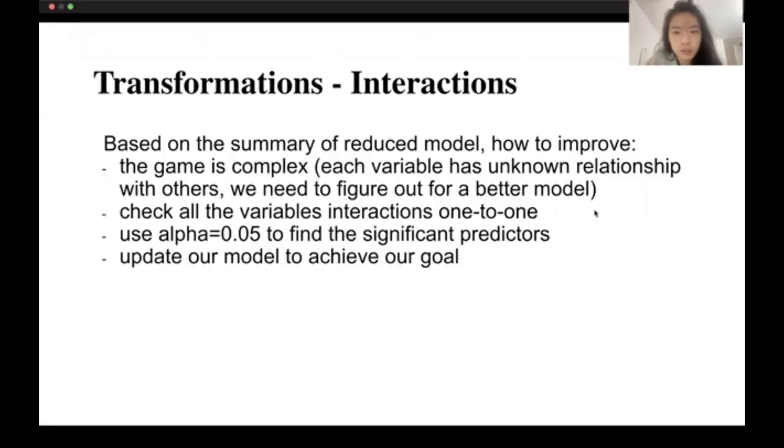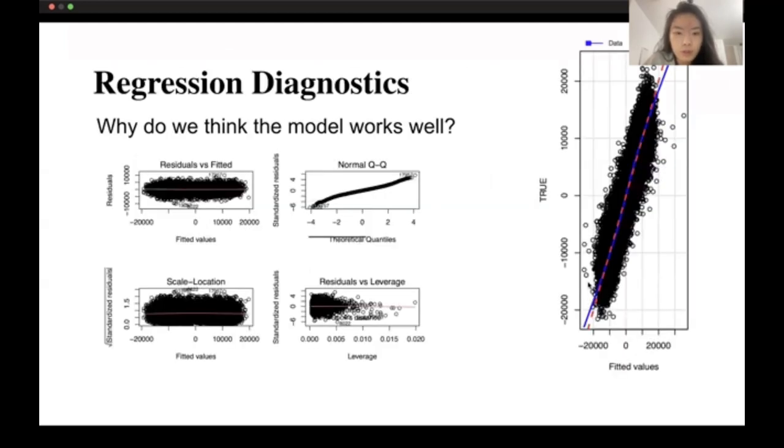We already checked the collinearity. Now we need to check interactions. We square all the variables and keep the significant variables with p-value less than 0.05. Then we use summary function on our final model.